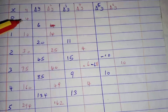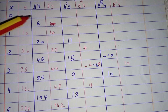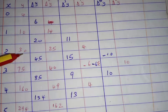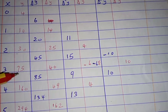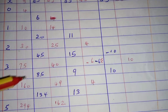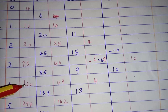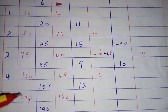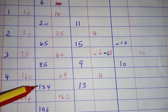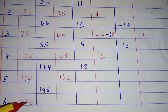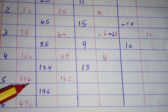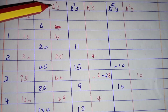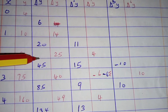Once you write them, you start by obtaining the first difference: 10 minus 4 is 6; 30 minus 10 is 20; 70 minus 25 is 45; 160 minus 75 is 85; 294 minus 160 is 134; 490 minus 294 is 196. Then you obtain the second difference from here.